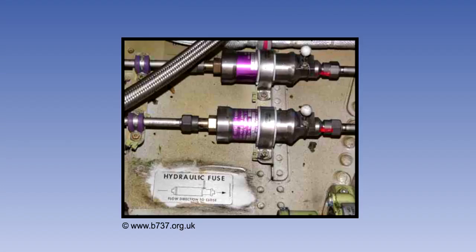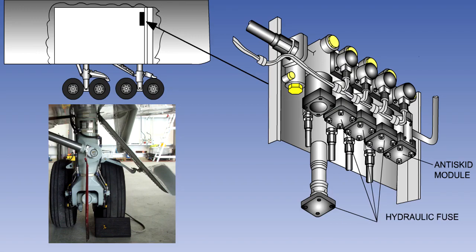Modern jet aircraft are dependent on their hydraulic systems, not only for raising and lowering the landing gear, but for flight controls and many other services. For this reason, most aircraft use more than one hydraulic system. In these systems, provision is made to fuse or block lines, particularly those in vulnerable areas, if a serious leak should occur. The devices used to do this are known as hydraulic fuses. Wheel brakes are normally protected by fuse units, with each individual brake unit having a fuse. They are often co-located with the anti-skid modules in a safe area at the top of the wheel well.